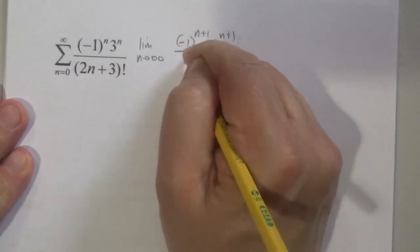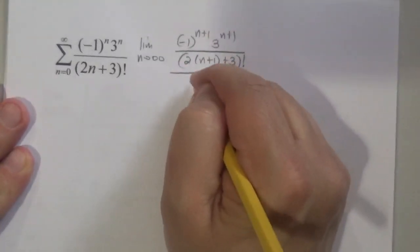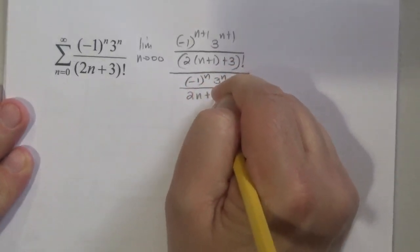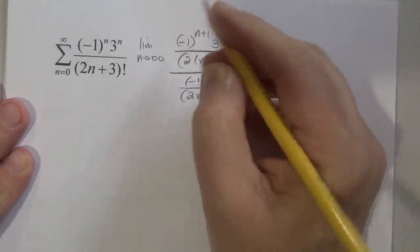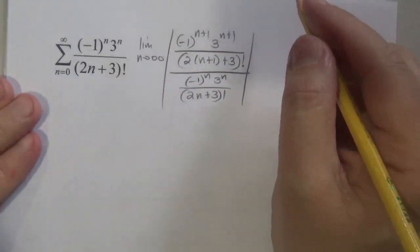All over negative 1 to the n, times 3 to the n, over (2n + 3) factorial, with absolute value bars.